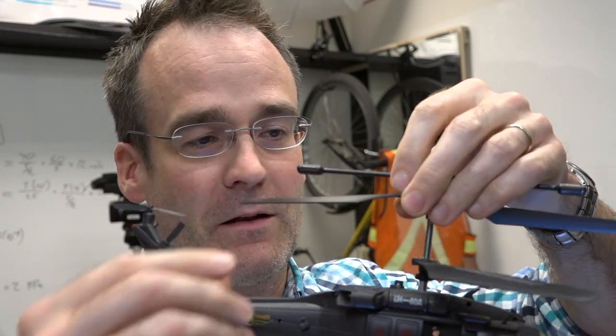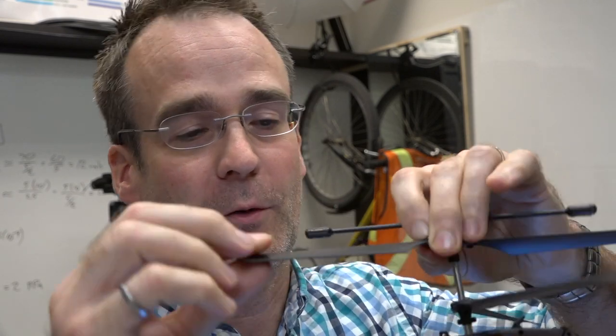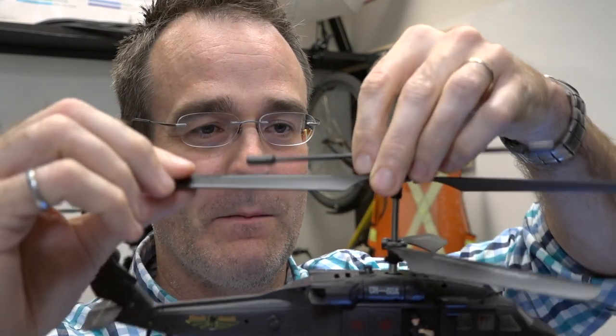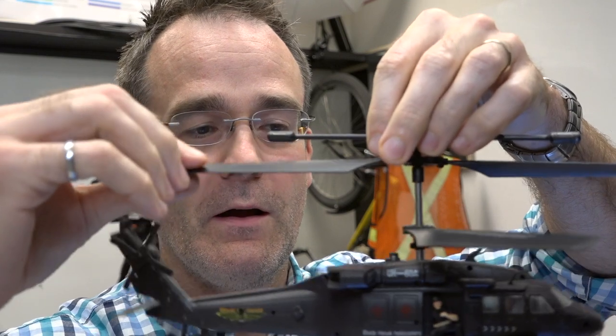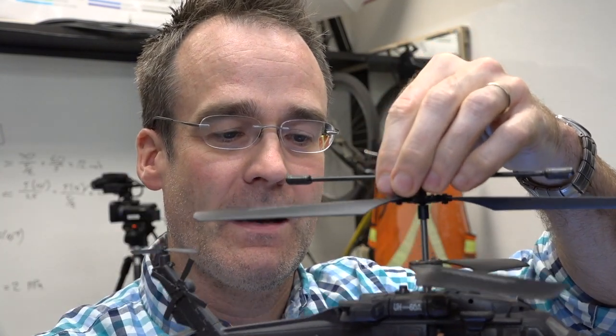So this is a little model helicopter, but in fact similar loads are applied. This thing here, the blade, it's called the rotor on the helicopter. What would be the best material to make this out of for either this helicopter or more realistically a large one?